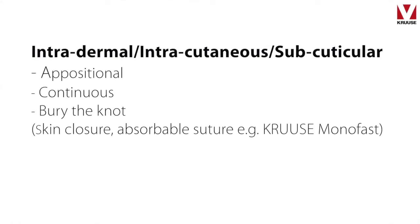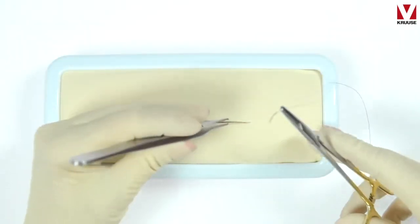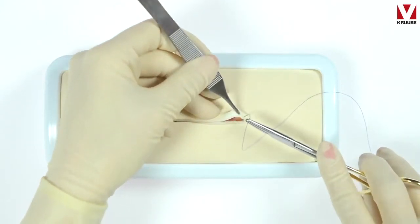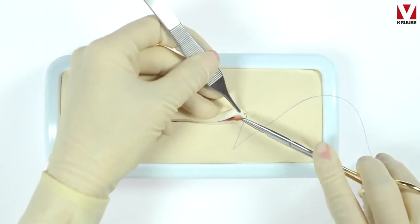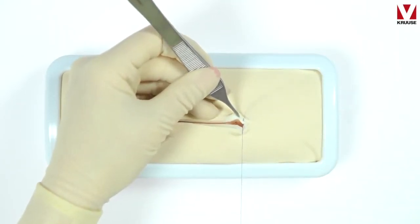Intradermal, subcuticular, or intracutaneous suturing pattern. This is an appositional continuous suturing pattern where I will show you how to bury the knot. This is a very popular suturing technique for skin closure. I recommend that you use an absorbable, that is mandatory, and also a monofilamentic suture.